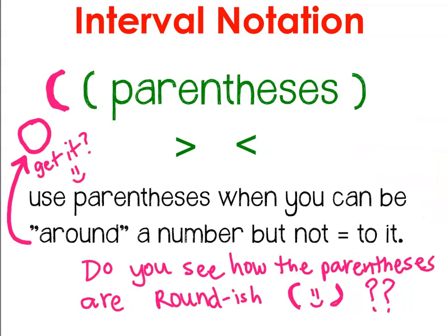Parentheses are used when you cannot be equal to a number, but you can be around that number. So if I said I'm greater than 3, then I can't be 3, but I can be around it, like 3.0001. So we use parentheses when we have a less than or greater than sign.